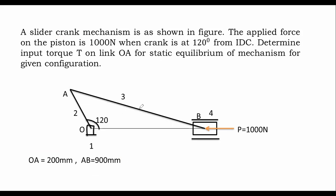Based on the diagram given or based on the dimensions given, we need to construct the slider crank mechanism. A slider crank mechanism is as shown in figure. The applied force on the piston is 1000 Newton when the crank is at 120 degrees. Link two is a crank, which is at 120 degrees with IDC, that is from IDC. We need to calculate the input torque T on link two, for static equilibrium of the mechanism as given in the configuration.